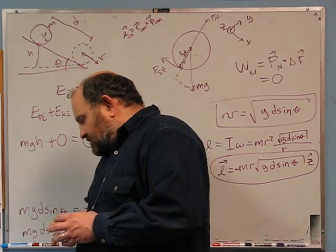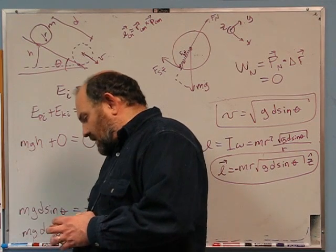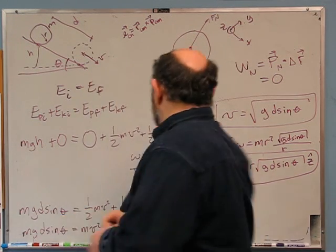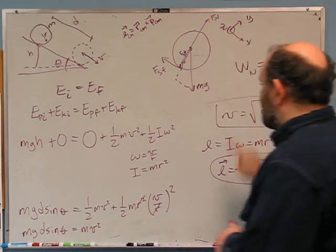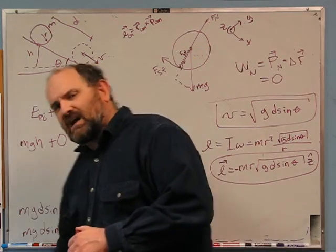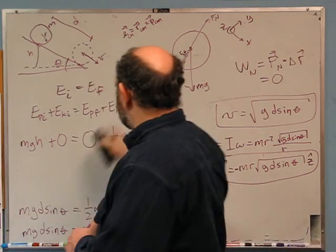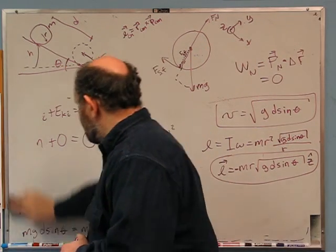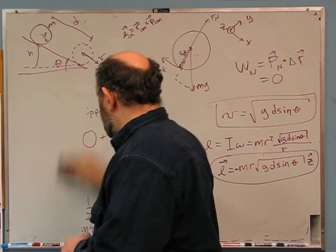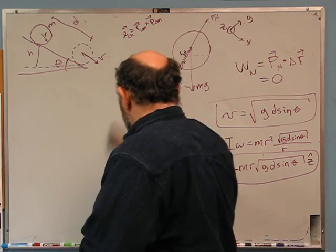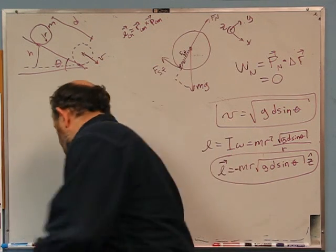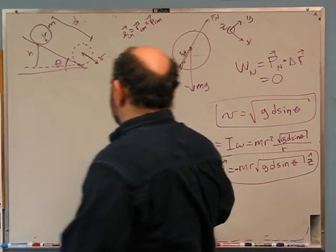Part C: use your answer to part A to figure out how long it took the wheel to go through distance d. This is kinematics from the first stuff we did in the class. How long did it take to go through distance d?